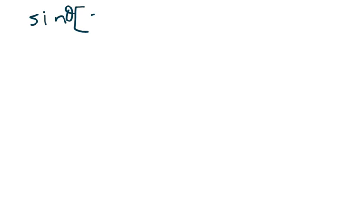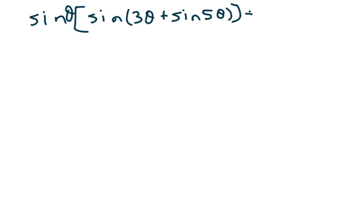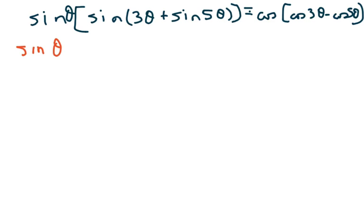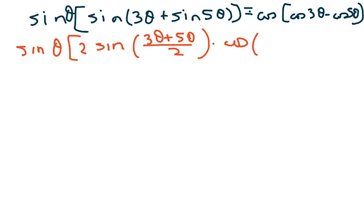The next one is very similar. We have sine of theta times (sine of 3 theta plus sine of 5 theta), and we want this to equal cosine of theta times cosine of 3 theta. We're going to do the same thing as before: use your formulas to get sine of theta times 2 sine of (3 theta plus 5 theta) over 2 times cosine of (3 theta minus 5 theta) over 2.